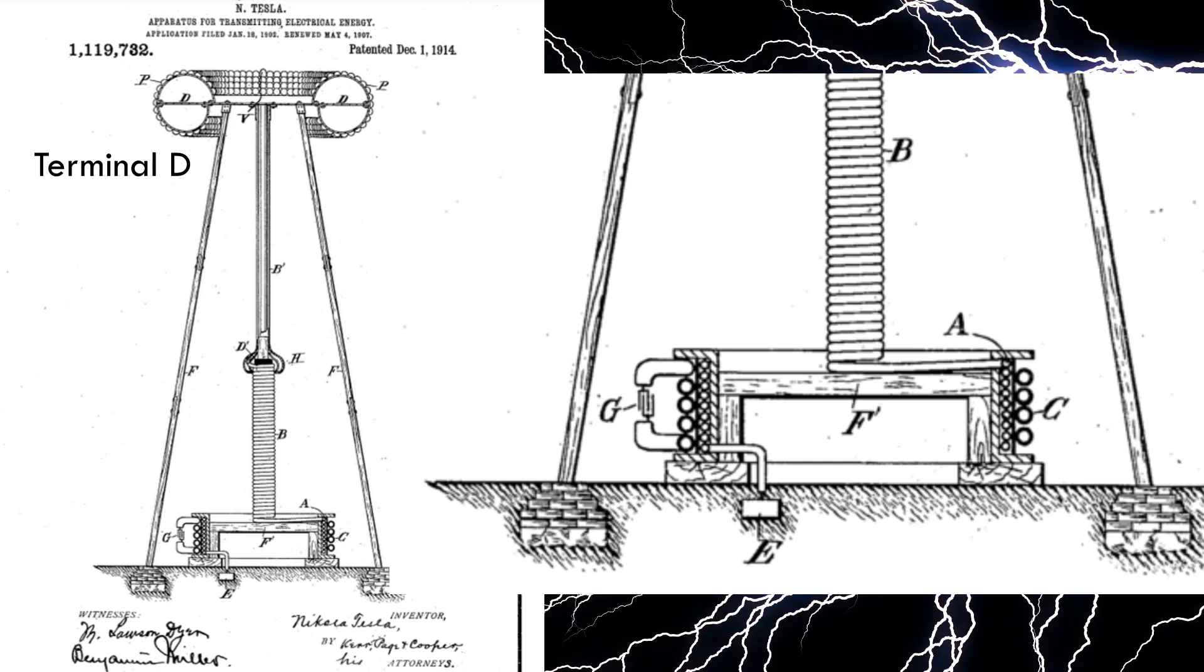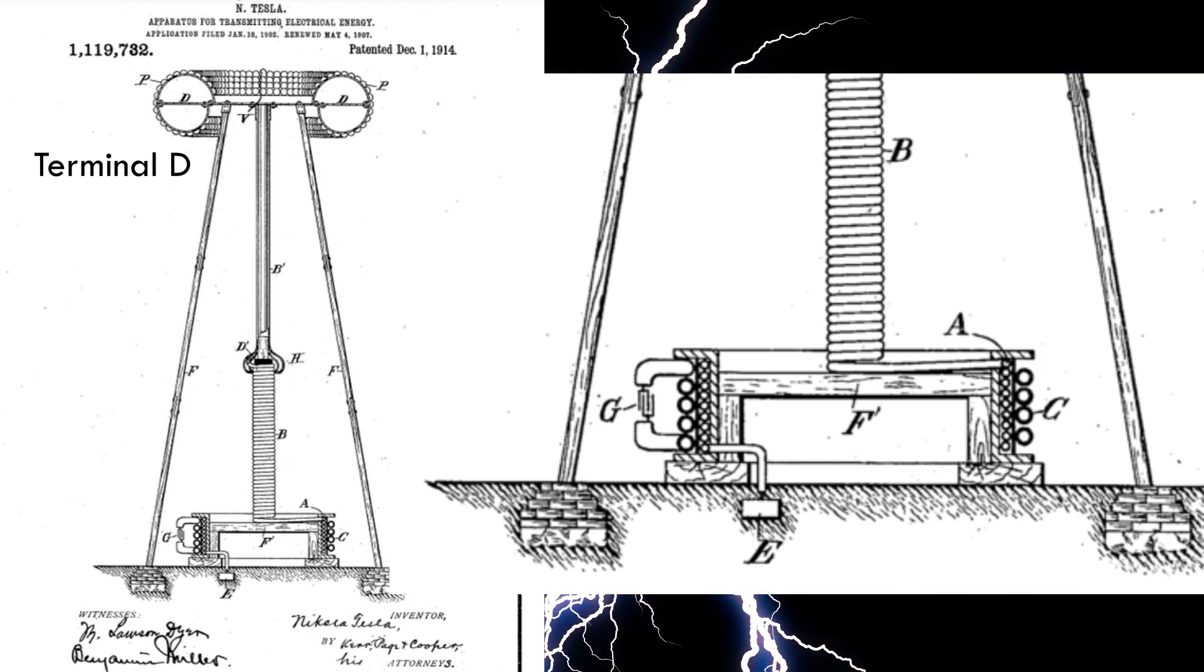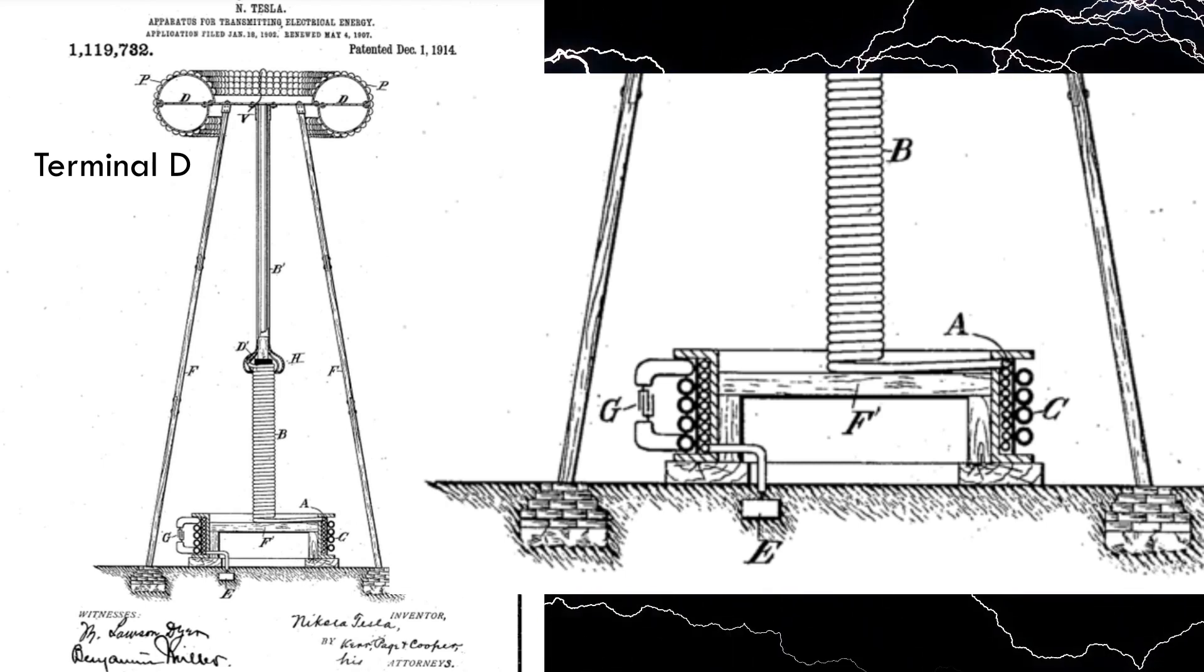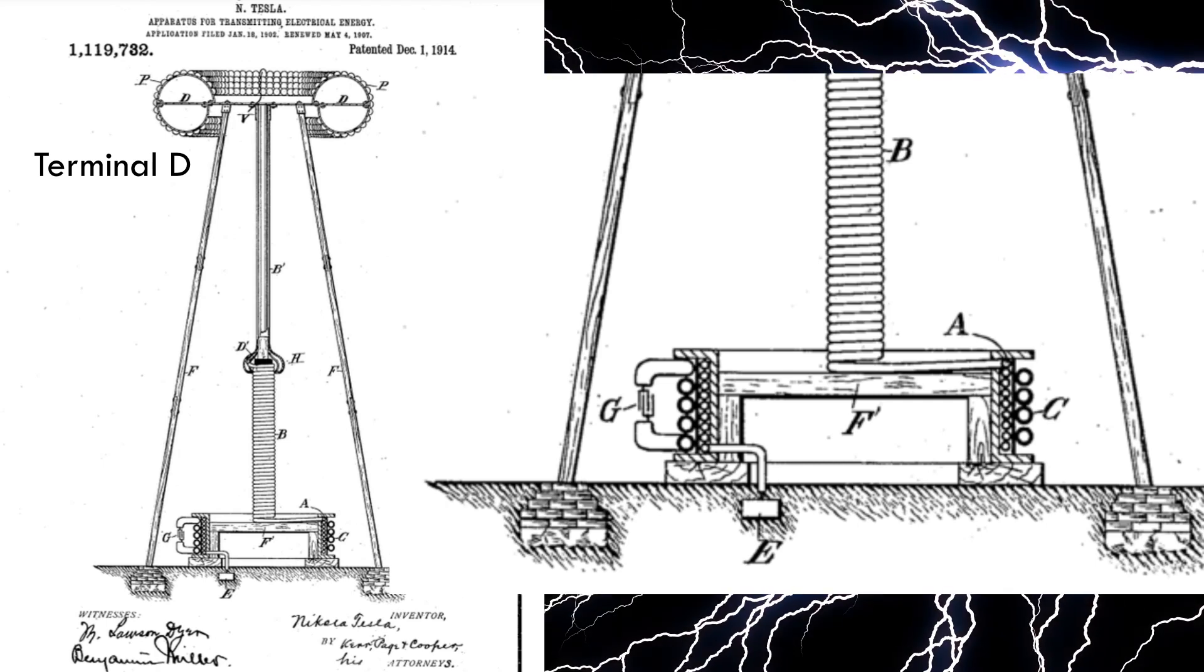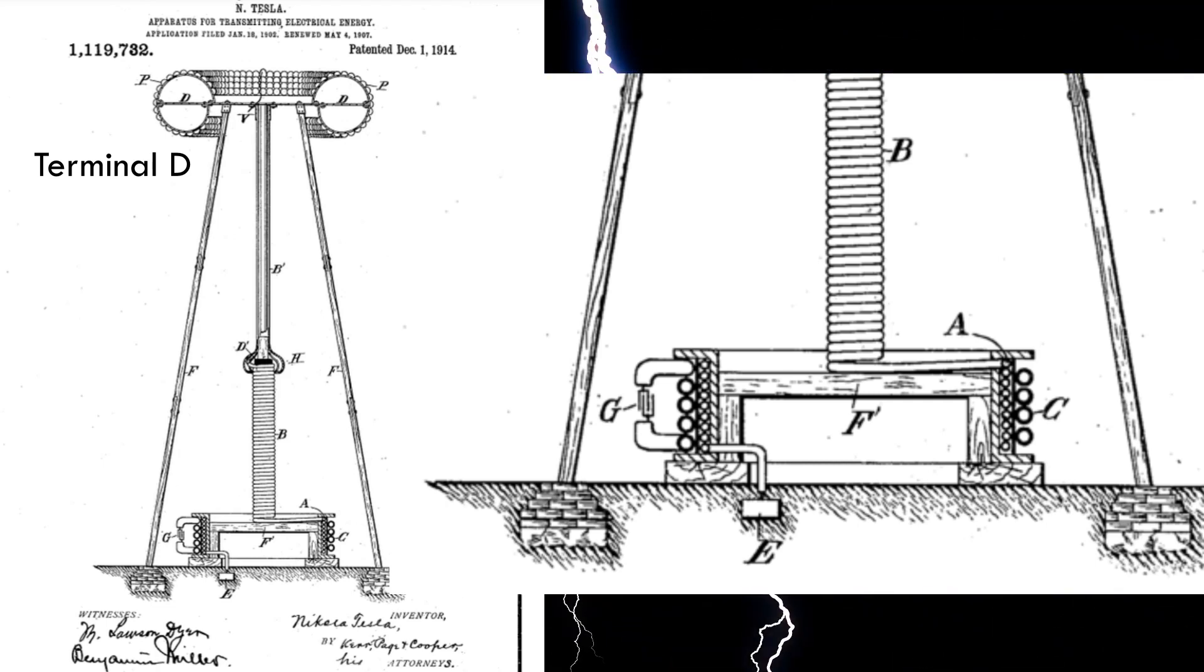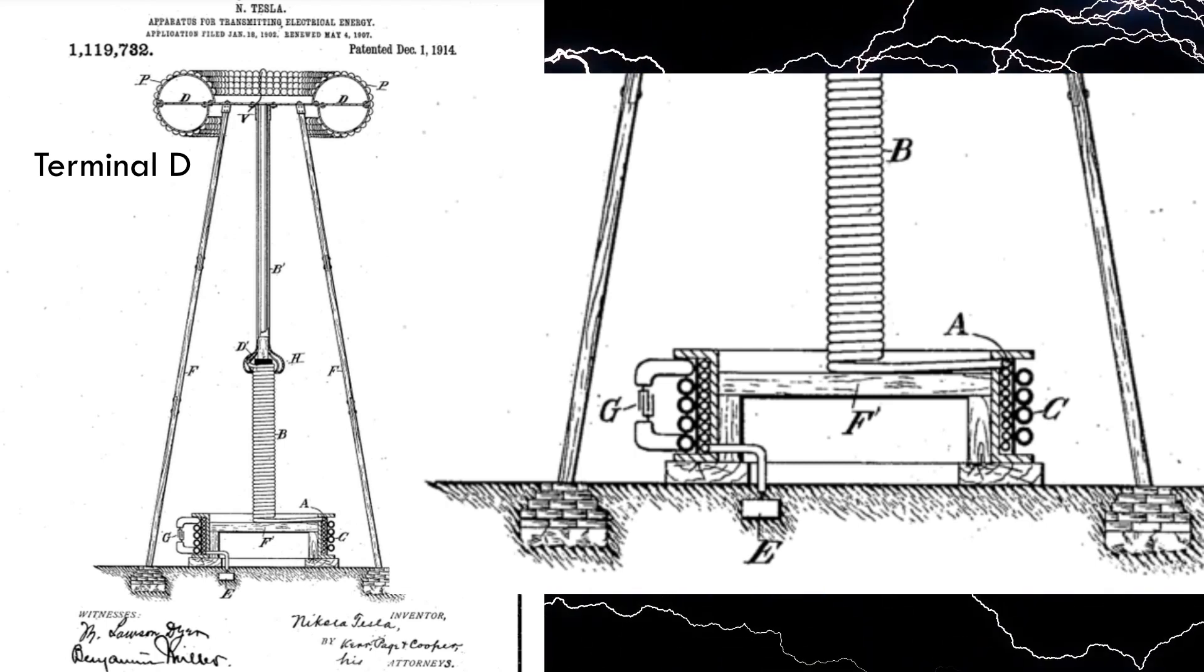4. As a means for transmitting electrical energy to a distance through the natural media, a grounded resonance circuit, comprising a part upon which oscillations are impressed, and another for raising the tension, having its outer conducting boundaries, on which a high tension charge accumulates, arranged in surfaces of large radii of curvature, substantially as described.